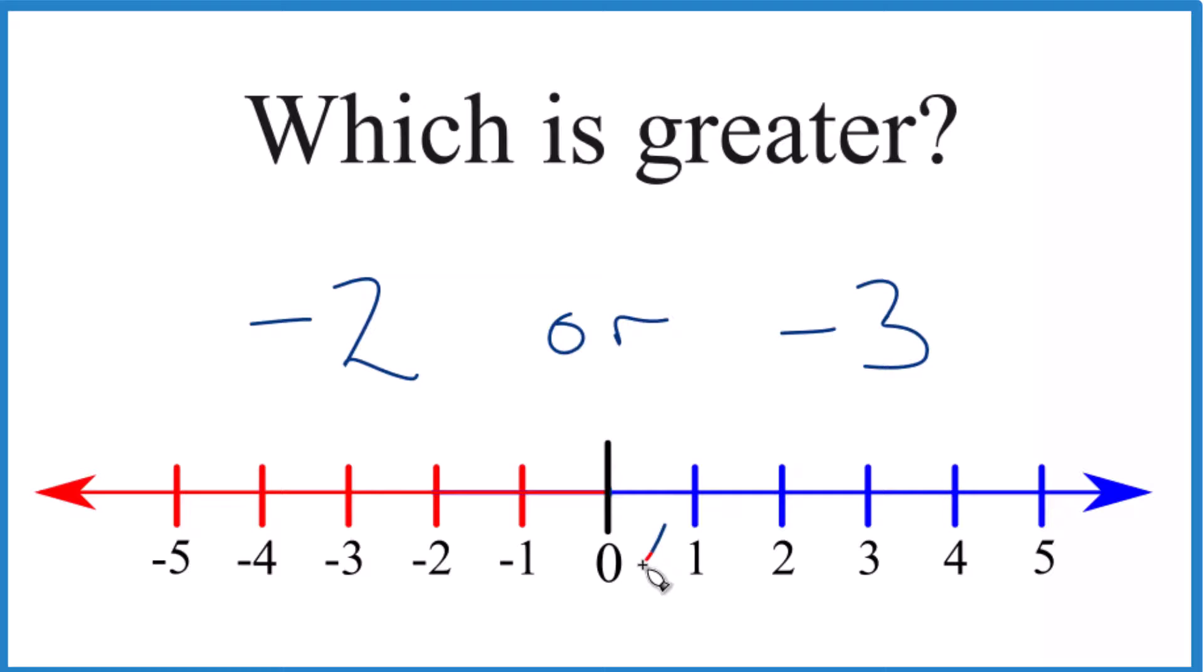So you know that 1, that's greater than 0. 0, that's greater than negative 1. Negative 1 is greater than negative 2. And then negative 2, that is greater than negative 3. So same thing we found before. Negative 2 is greater than negative 3.